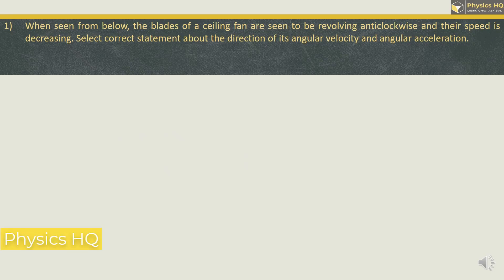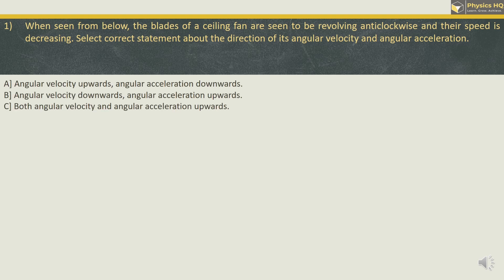When seen from below, the blades of a ceiling fan are seen to be revolving anticlockwise and their speed is decreasing. Select the correct statement about the direction of its angular velocity and angular acceleration. These are the options that we have.